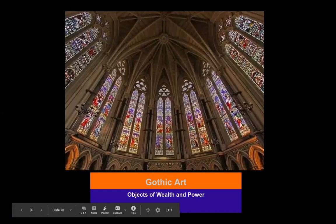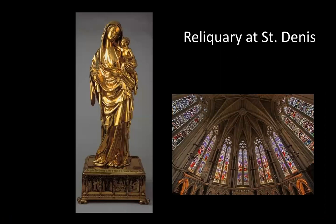We're going to look at objects of wealth and power in the Gothic. This is a reliquary at Saint-Denis that would have held a relic of Mary. I want to point out that there were still classical tendencies during the Gothic period — sculptures had a real sense of realism, proportion, and delicacy of detail, not just chunky and crude. There was a lot of detail to these objects.